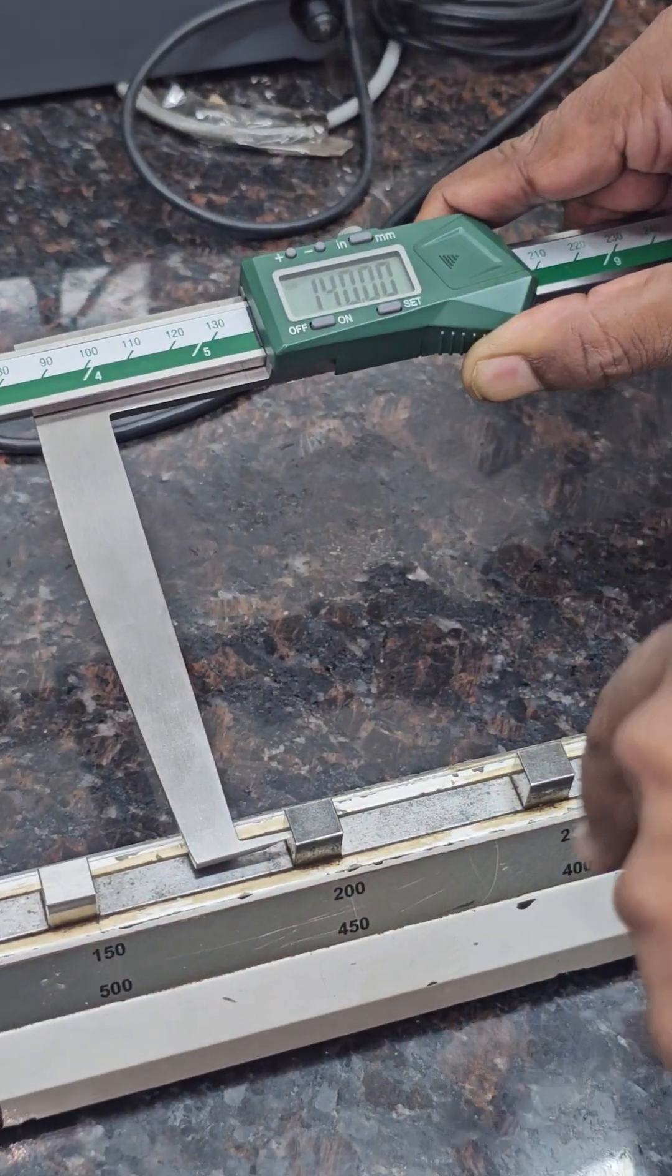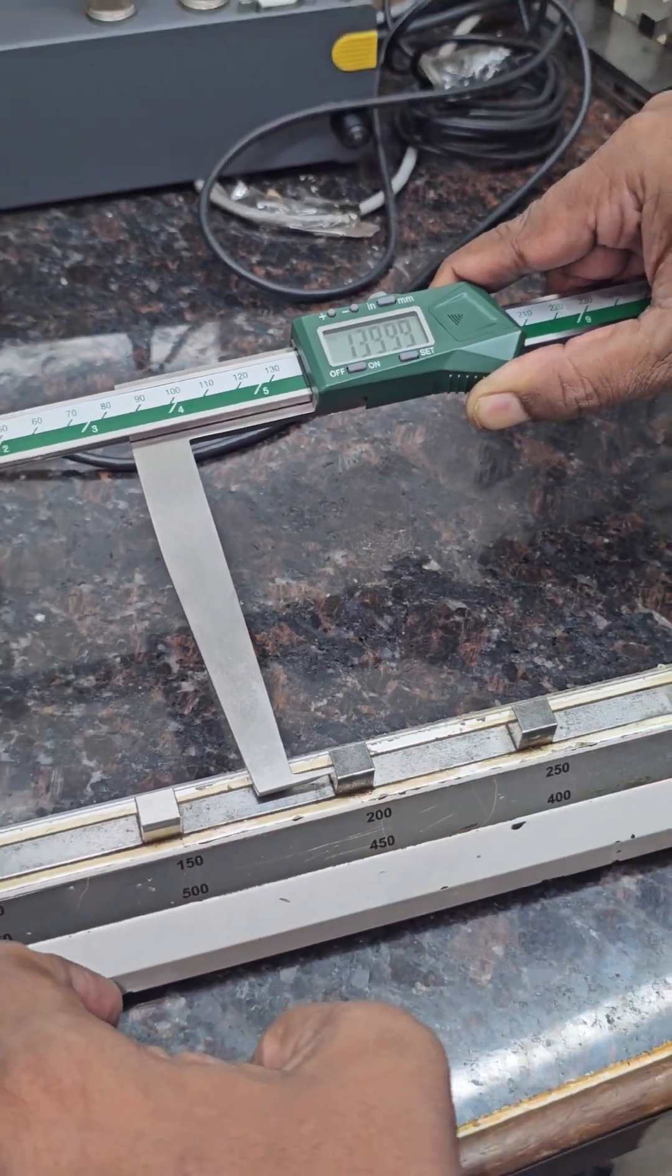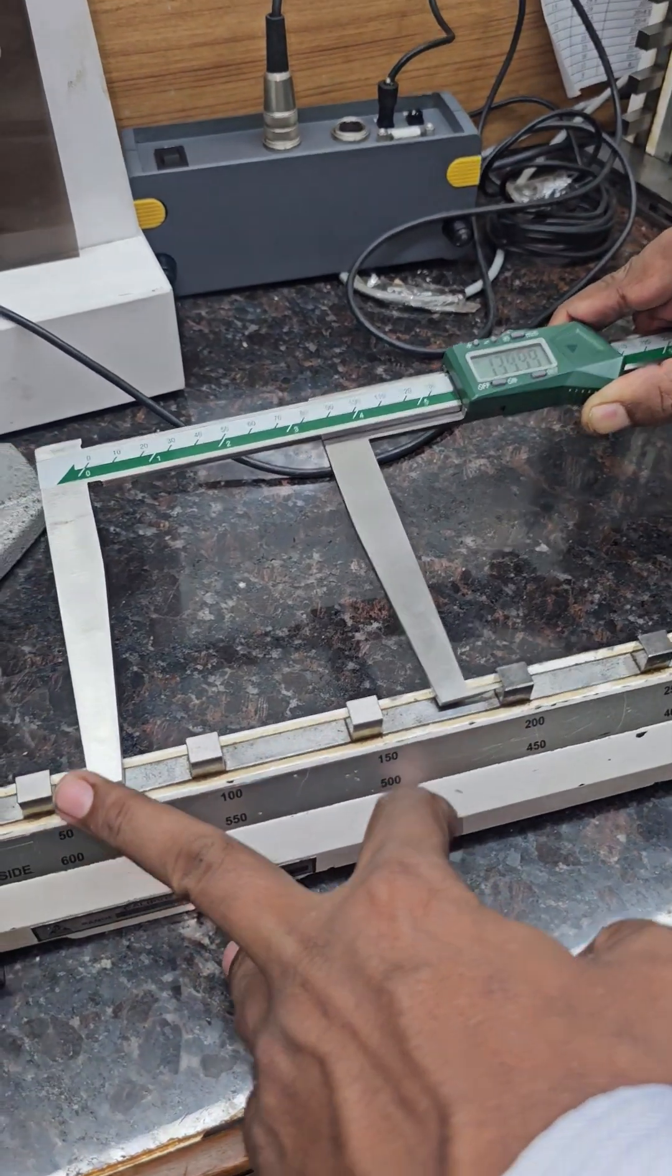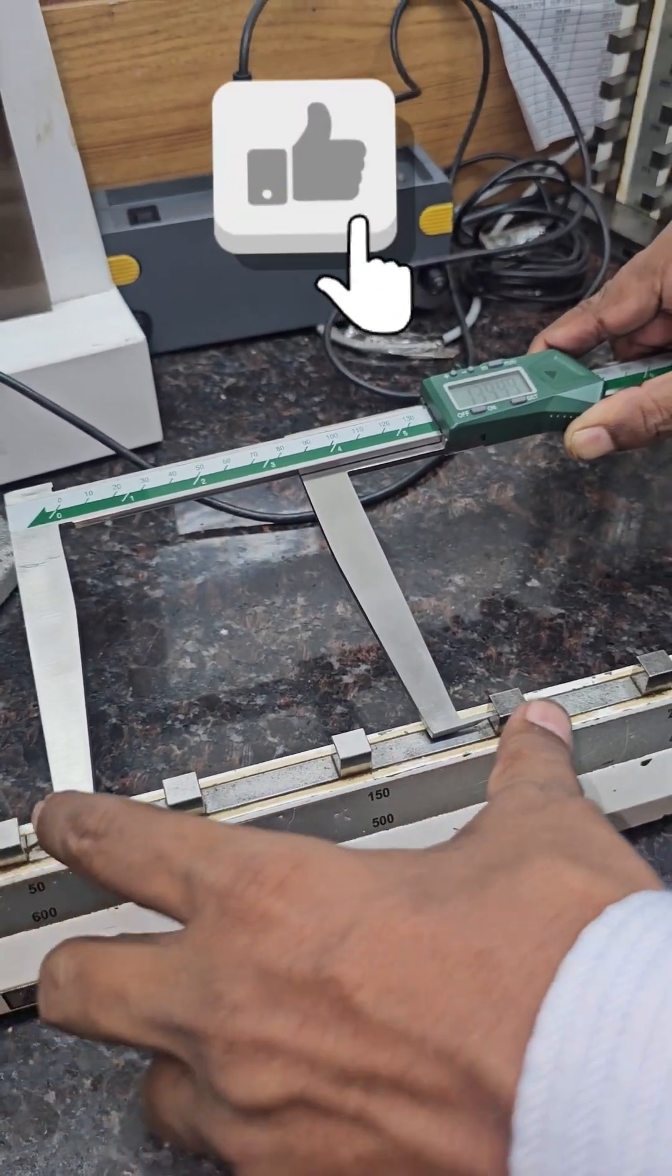It is exactly 140mm because the distance between this and this is 140mm. We can cross check the distance with the vernier caliper.